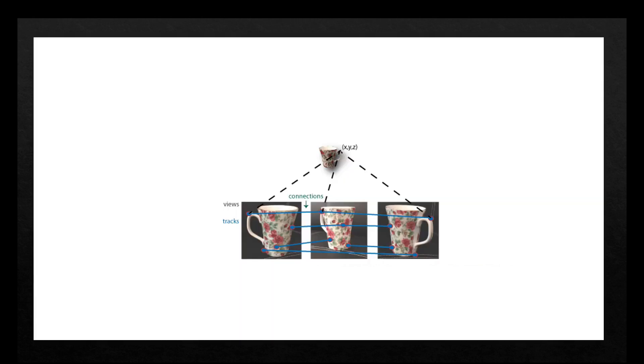A typical approach is to compute the tracks from pairwise point correspondences. Each track corresponds to a 3D point in the scene. To compute 3D points from the track, some kind of triangulation is performed.